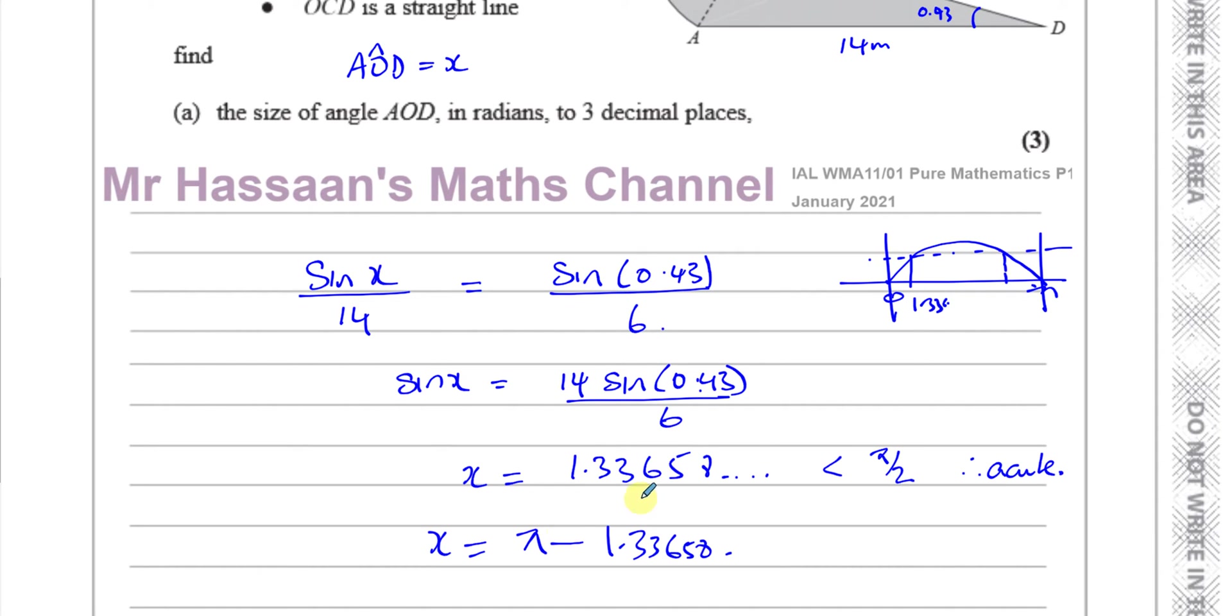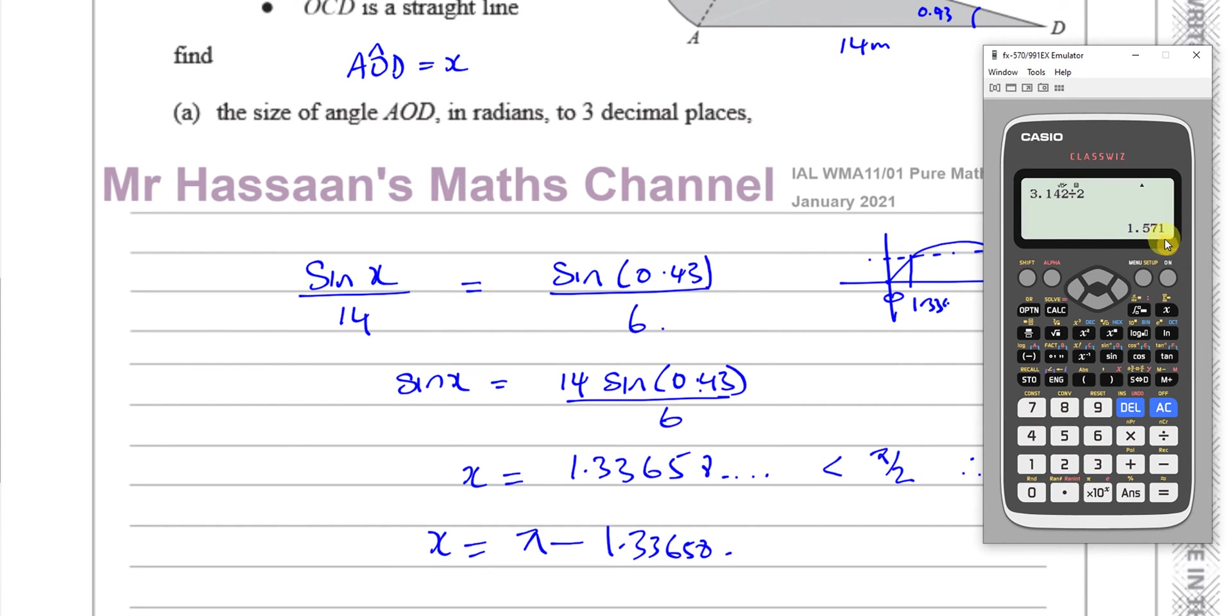Now, because we don't see these angles in terms of degrees, the temptation is to write this angle down as it is. But if you realize that this is actually less than pi over 2, because as we saw, pi over 2 is 1.571. And this is less than, this is an acute angle. So, we want the obtuse angle. So, what I'm going to do is I'm going to take pi minus the angle that we have. So, pi is 180, minus the angle that we found.